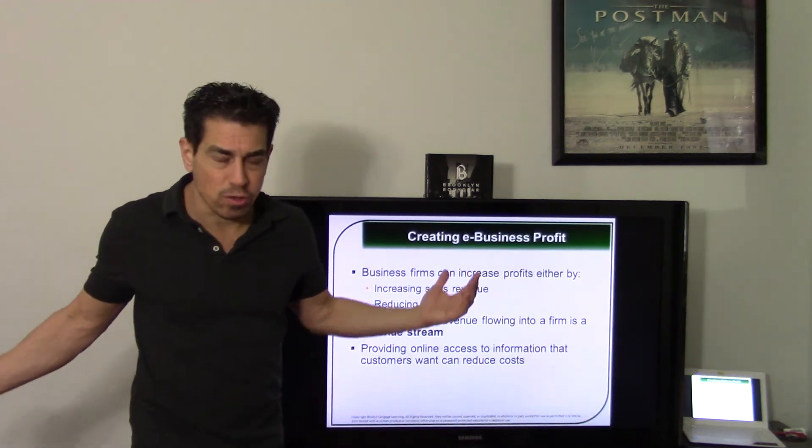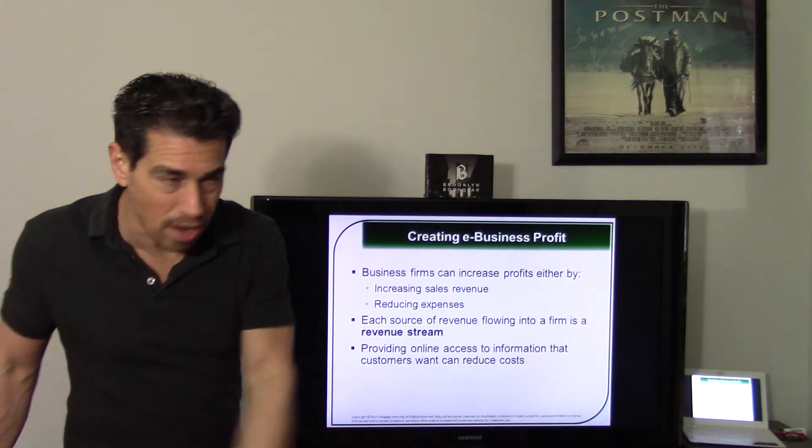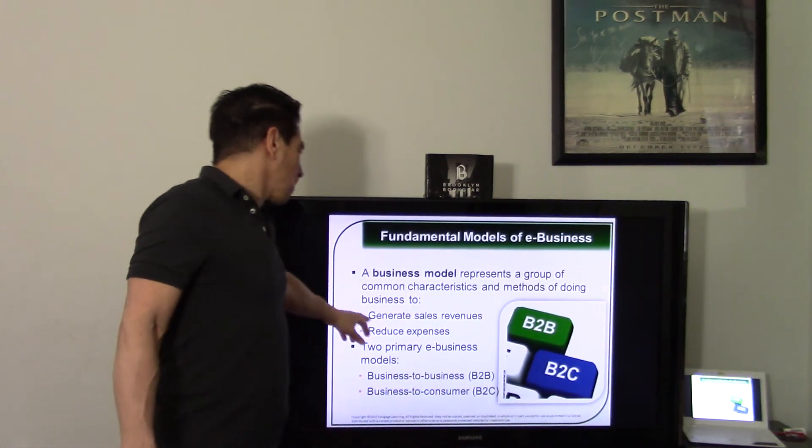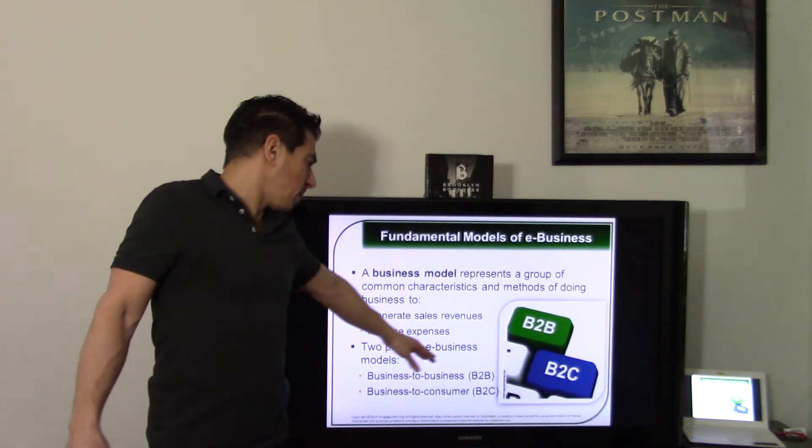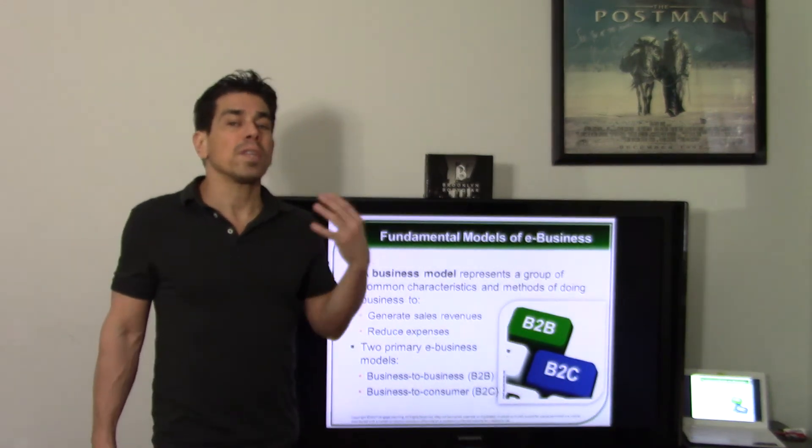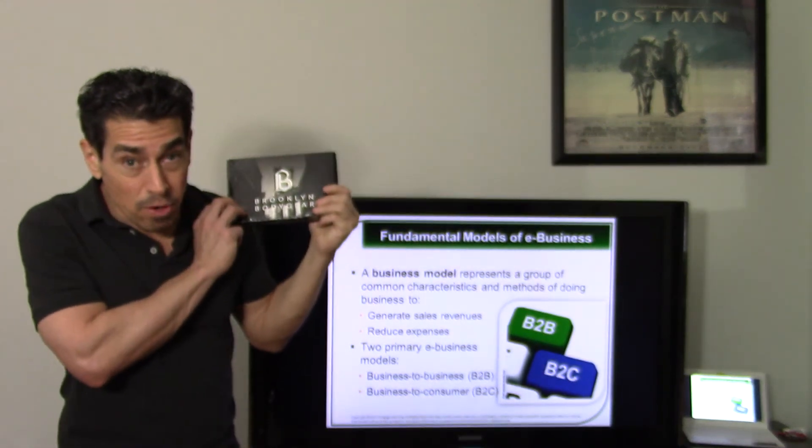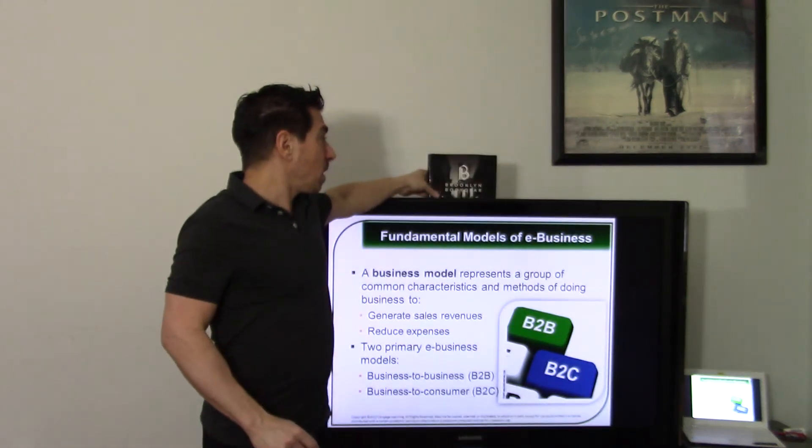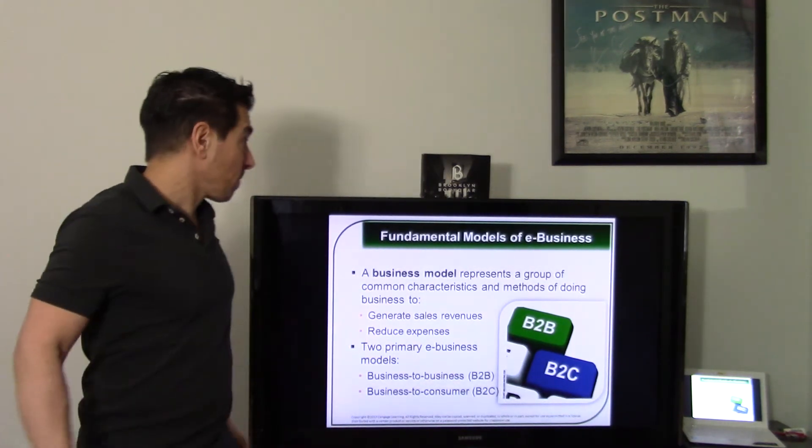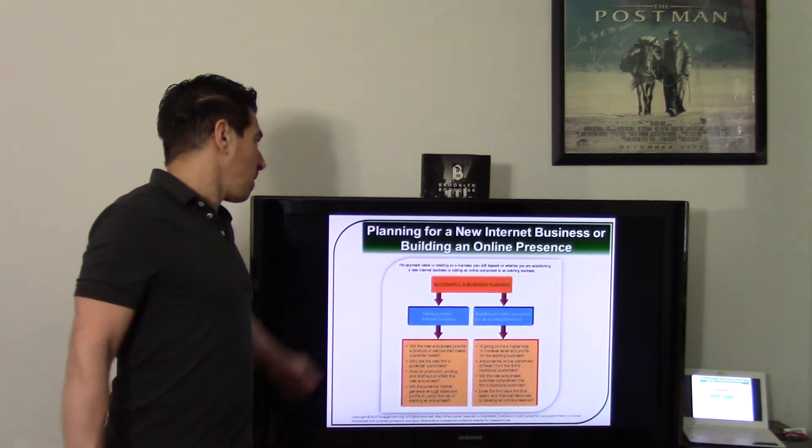Revenue stream, e-business profit is no different than any other profit. Revenue minus expenses equals profit. The business model is no different than any other business model. It's the same thing. Generate revenue, reduce expenses. B to B, B to C. We talked about this already. Business to business, business to consumer. The good thing about e-commerce is that you don't necessarily need a physical location. You can do it out of your house. I'm doing Brooklyn body gear right out of this apartment. Right out of this apartment and through Amazon. I still spent a lot of money, but nowhere near as much if I had to have a shop or I had to have a warehouse. So you can actually save some money in doing e-business.